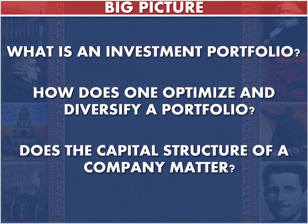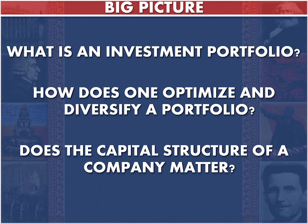Let's begin with a summary of what we're going to cover. First, what is an investment portfolio. Second, how to optimize and diversify a portfolio — diversify means how do you put a lot of different types of assets into the portfolio, and optimize means what do you include to maximize your return on investments. Not just whether a particular pick does well, but how do you make the portfolio overall perform well over a long period of time. And lastly, does the capital structure — meaning how a company finances its assets — matter.